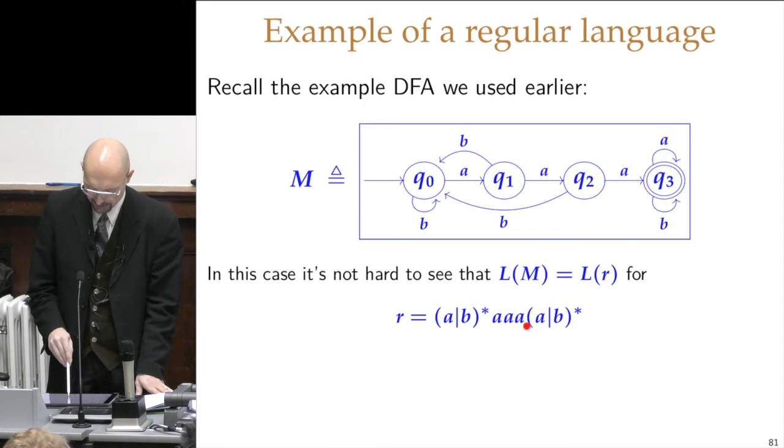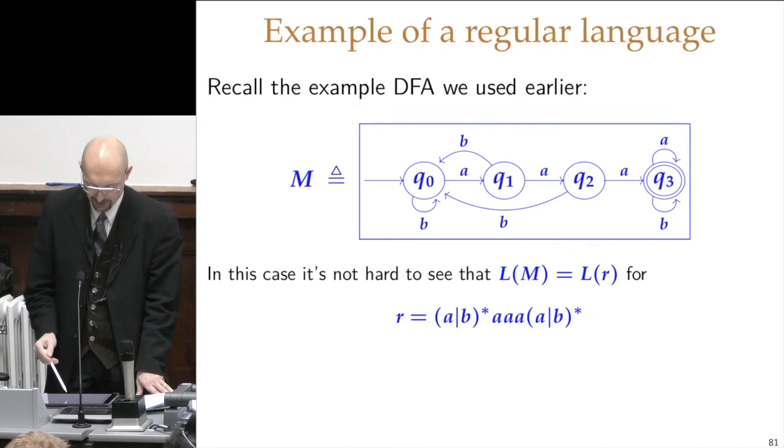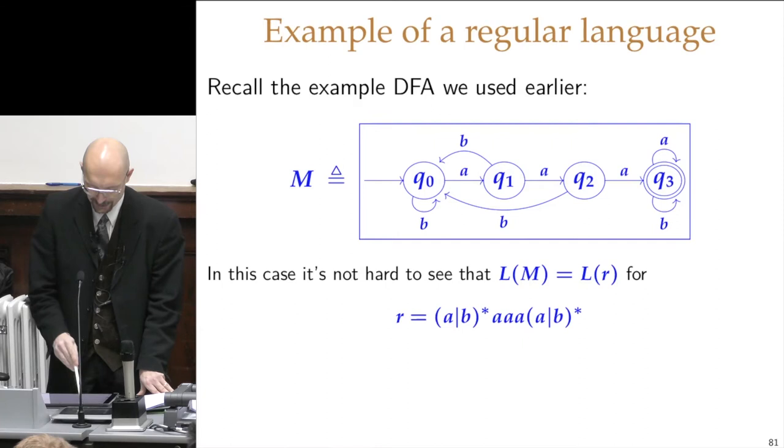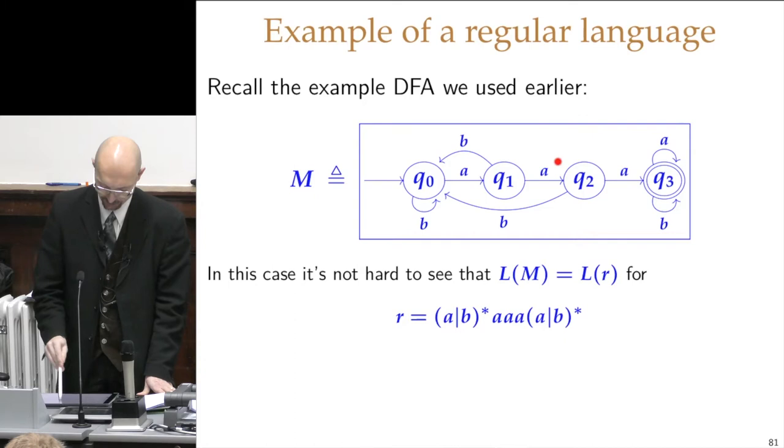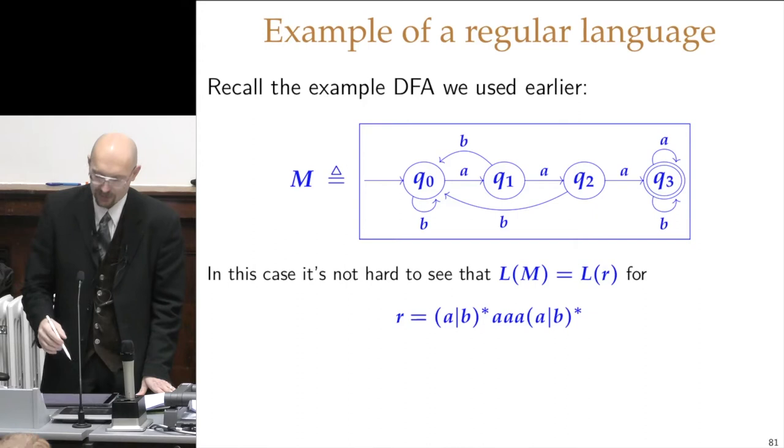This was maybe slightly easier to see in the NFA version, where I had the same pattern here at the start, and then three A's, but I could not do that in the DFA because from that initial state, the A would have to do only one thing. So either it looped here or it went there. And I could not do both unless I had an NFA.